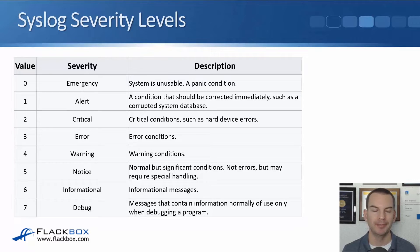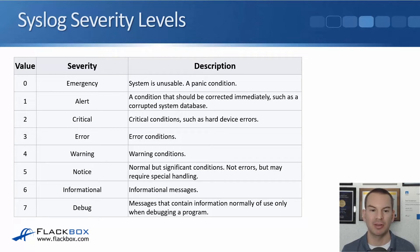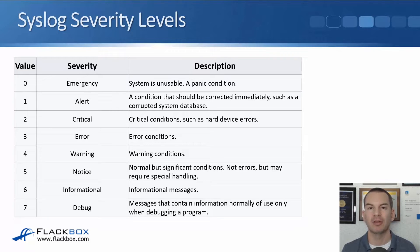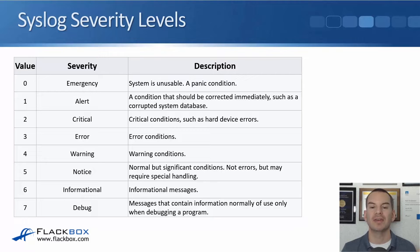Level four is a warning — that might be serious and is definitely something you want to check out. Level five is a notice, which is a normal but significant condition you should also check — for example, an interface being shut down by an administrator. That's not a warning or an error because somebody deliberately did that, but it can be impactful. Level six is informational — nothing's wrong, it's just telling you about a normal thing happening. Level seven is debug messages, containing information normally only useful when debugging a program — quite low-level and verbose.